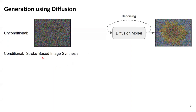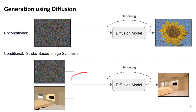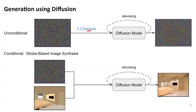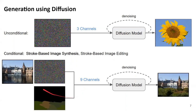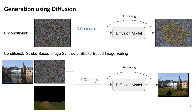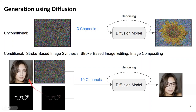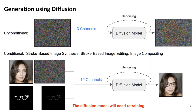For stroke-based image synthesis, you'd design a pipeline with two inputs — previously three channels, now six channels because you also have a guiding image. So the same diffusion model you previously trained cannot be used because the input shape has changed. Similarly, for stroke-based image editing you have three more extra channels because you also have the realistic image, giving nine channels. For image compositing, you might have an extra channel indicating which parts of two images to combine. So for all three different tasks, you would have to retrain the huge diffusion model again and again, which is not efficient.